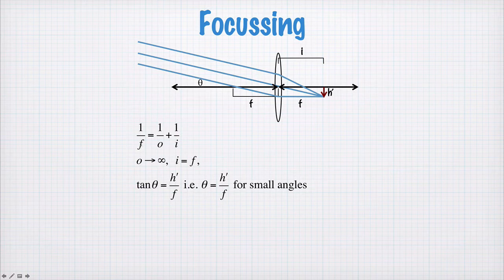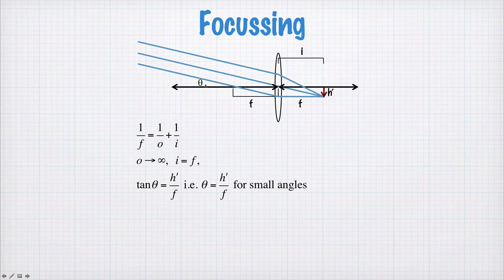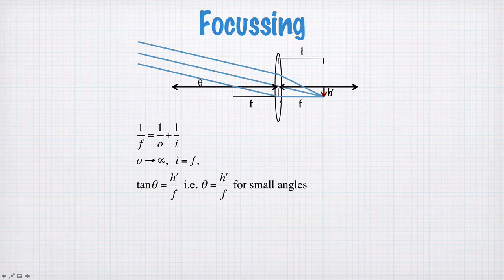and so we get that the focal length must be equal to the image distance. So light coming in here from a distant object at some angle θ gets focused to a point at the focal length of the lens. So the focusing point here is at f. i is equal to f.